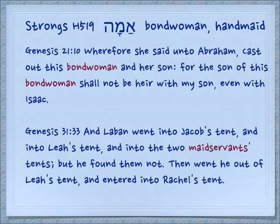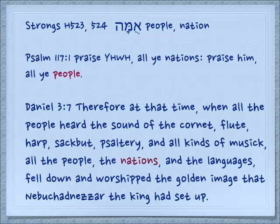Genesis 31:33: 'And Laban went into Jacob's tent and into Leah's tent and into the two maidservants' tents, but he found them not. Then went he out of Leah's tent and entered into Rachel's tent.' And a not-so-frequently-used word for a people group is umma. Psalm 117:1: 'Praise Yehovah, all ye nations. Praise him, all ye people.'